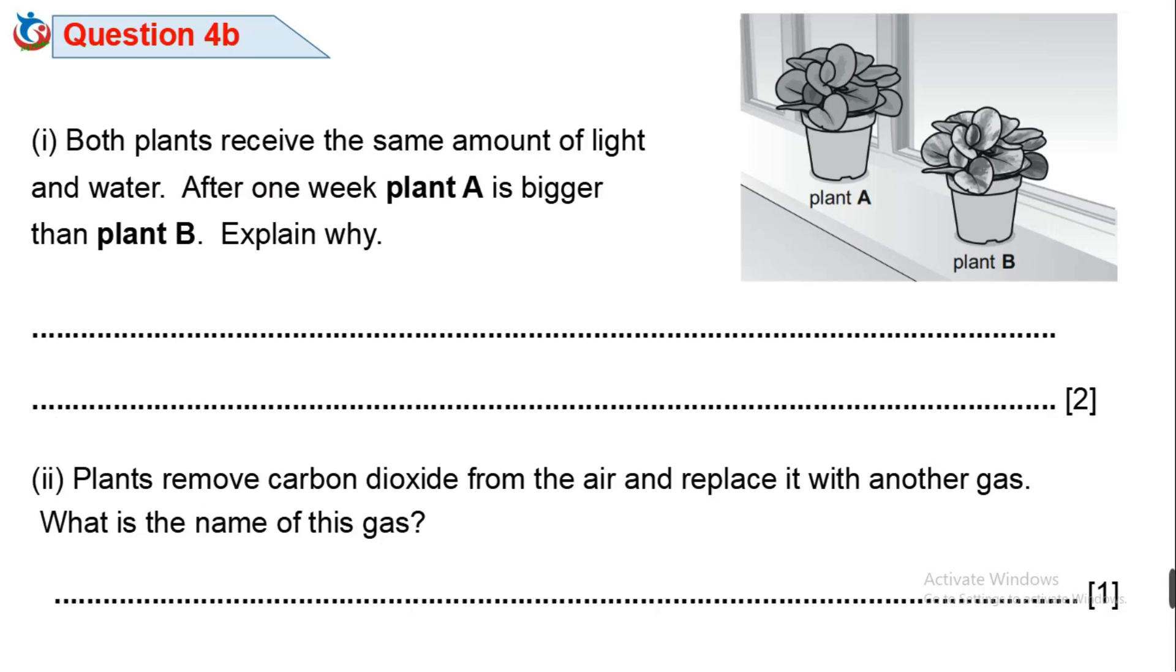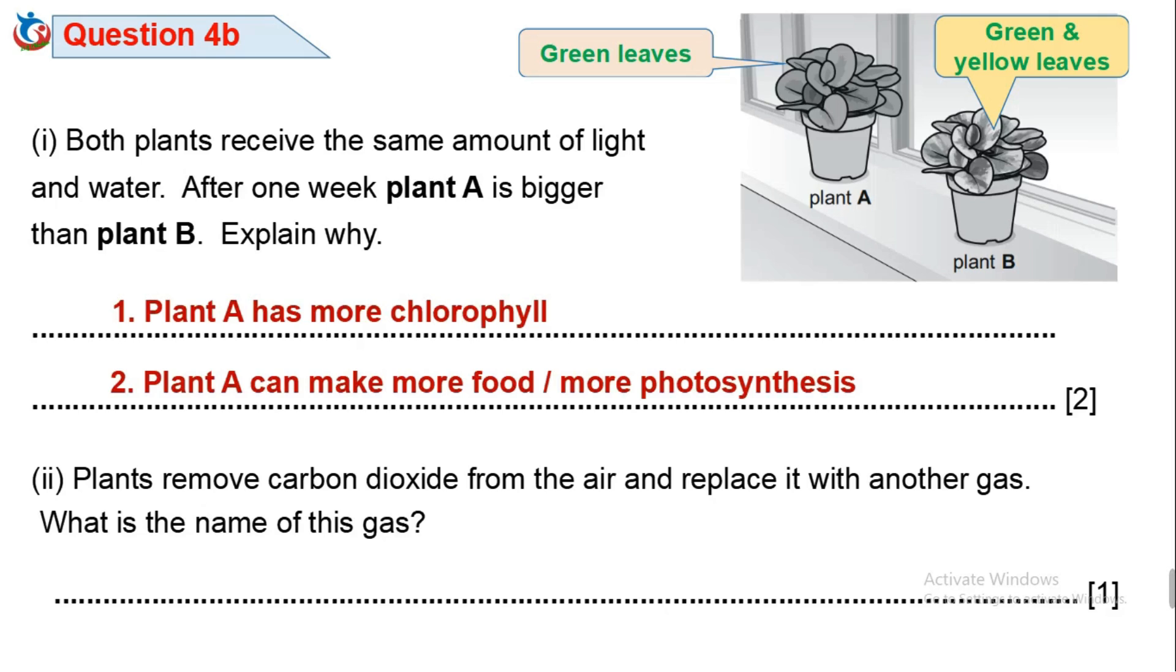From the information we have, plant A has green leaves and plant B has green and yellow leaves. So plant A with only green leaves shows that plant A has more chlorophyll to trap more sunlight and therefore carry out more photosynthesis to produce more food than plant B. So yellow leaves in plant B lack chlorophyll.